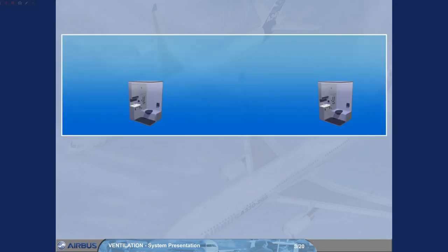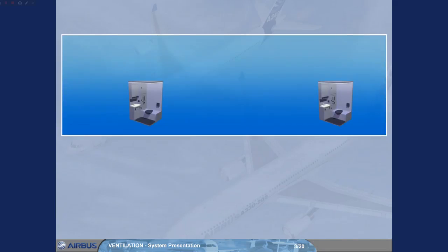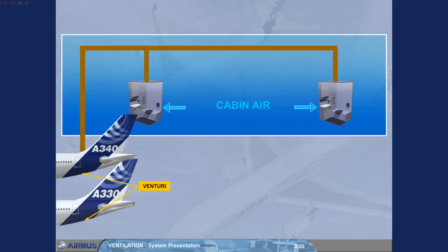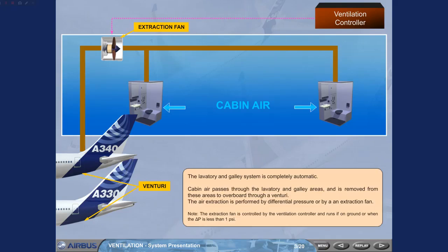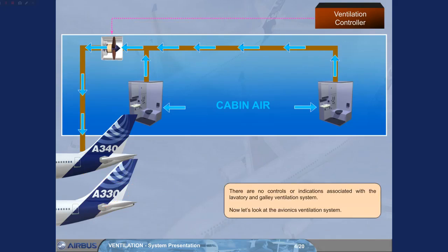The lavatory and galley system is completely automatic. Cabin air passes through the lavatory and galley areas and is removed from these areas to overboard. The air extraction is performed by differential pressure or by an extraction fan. The extraction fan is controlled by the ventilation controller and runs on the ground or when the delta P is less than 1 psi. There are no controls or indications associated with the lavatory and galley ventilation system.